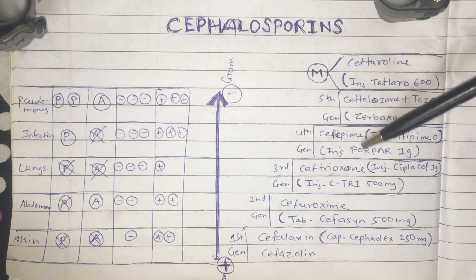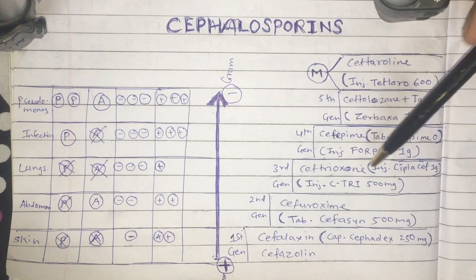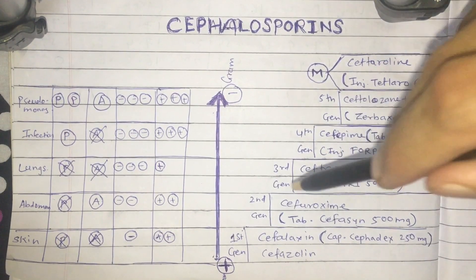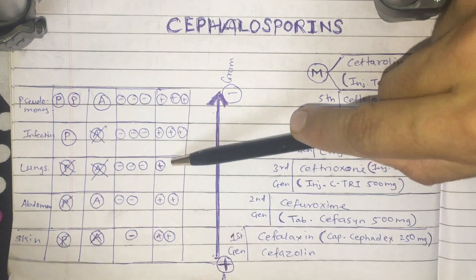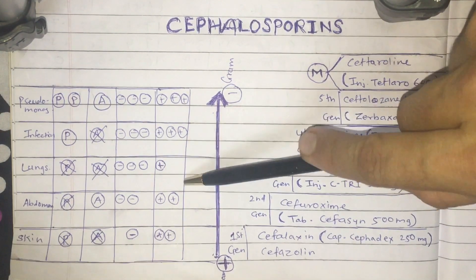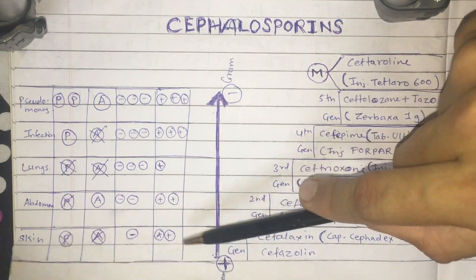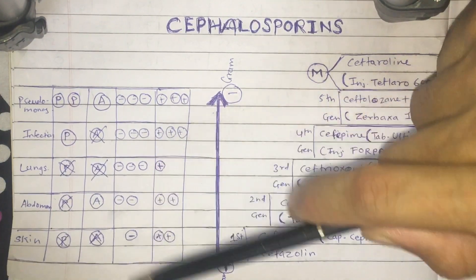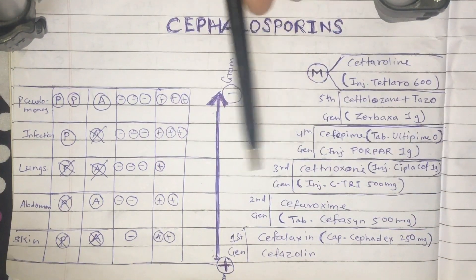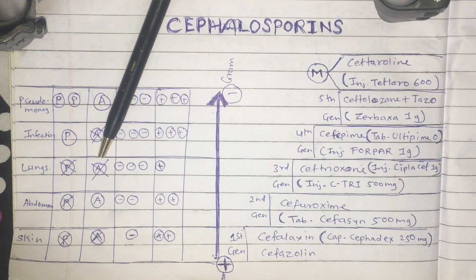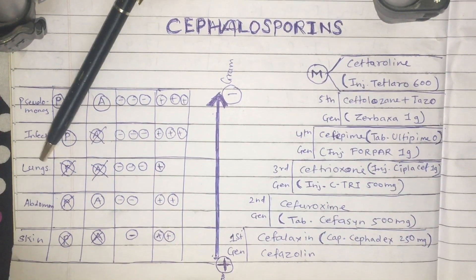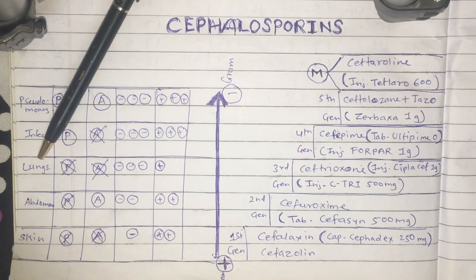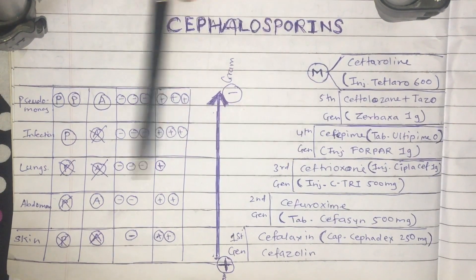For third generation cephalosporins, we have Ceftriaxone, available as injection 1 gram or 500 mg. Third generation cephalosporins do not have as good gram-positive coverage as first or second generation, but they have better gram-negative coverage. They do not act against anaerobic organisms or Pseudomonas. However, they are highly sensitive to gram-positive Pneumococcae, making them a better choice for lung infections.